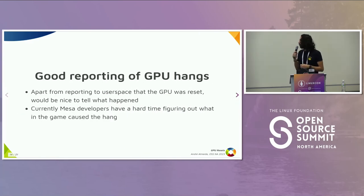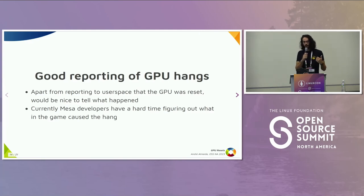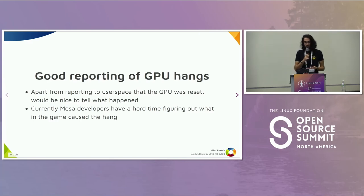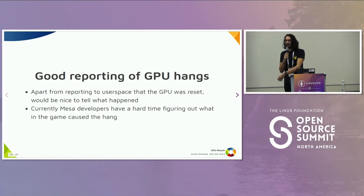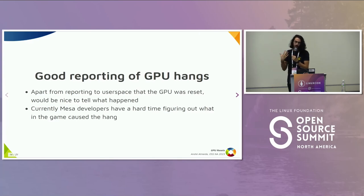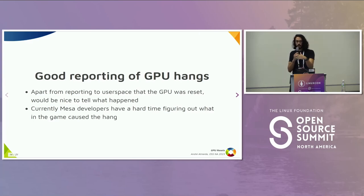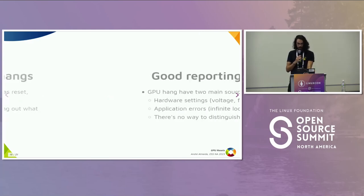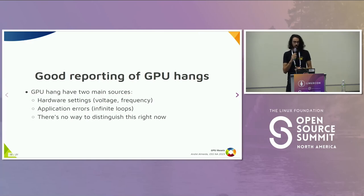Another thing we need to fix on GPU resets on Linux is not only telling user space that a GPU reset has happened, but also telling user space what triggered that reset in the first place. Because right now, if your game crashes, you go on GitLab and say 'my game crashed' and attach lines and lines of logs, and developers have a hard time figuring out from all those lines what caused the hang in the first place. You have a lot of information but no context of what the GPU was running at the time it crashed.